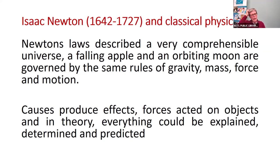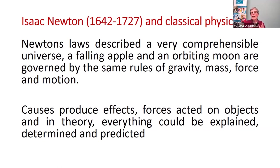A reminder of the ground on which we stood: Isaac Newton. His laws described a very comprehensive universe — a falling apple and an orbiting moon were governed by the same rules of gravity, mass, and motion. Causes produced effects, forces acted on objects, and in theory everything could be explained, determined, and predicted. So a Newtonian universe was a very predictive universe.